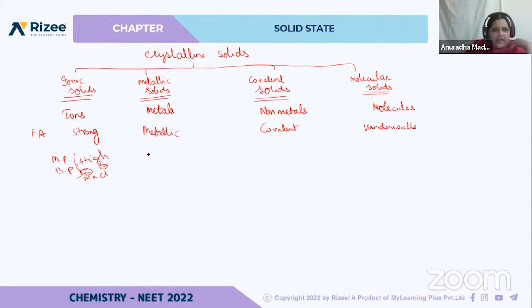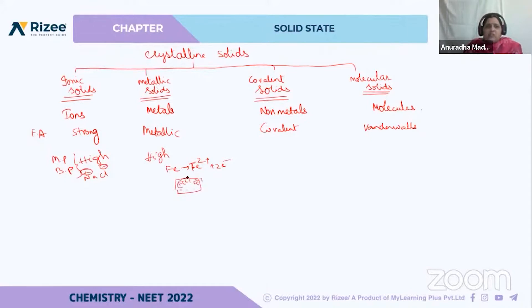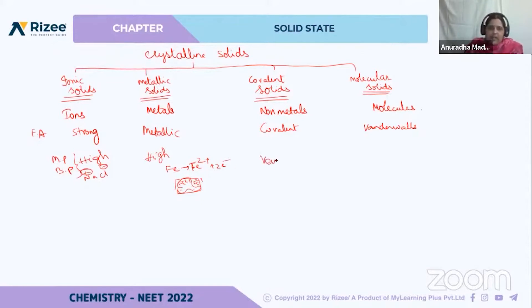Metallic solids also have a high melting point. If we consider iron, Fe releases Fe²⁺ and two electrons, or Fe³⁺ and three electrons. So Fe²⁺ ions and electrons coexist, and the electrons revolve around the iron ions. This arrangement also requires more temperature to break down, so the boiling point of metallic solids is also high. For covalent solids — for example diamond — the melting and boiling point is very high as well.